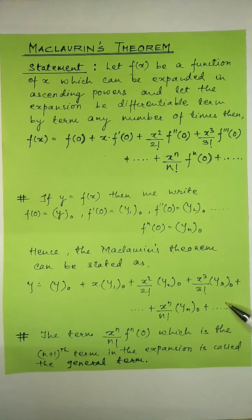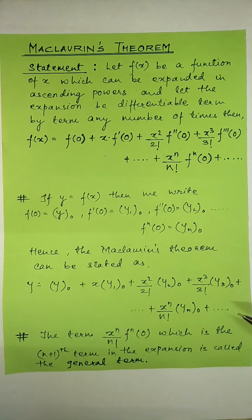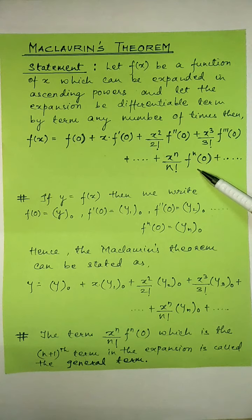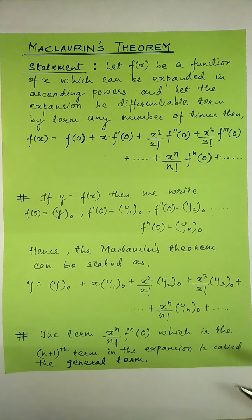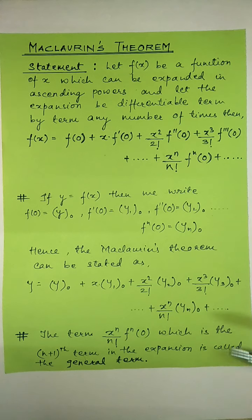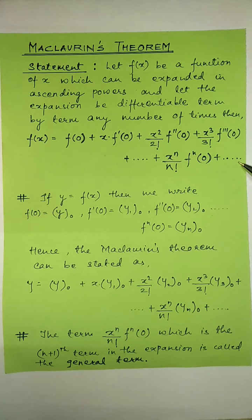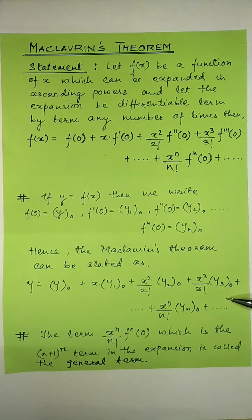So this becomes yet another form of the Maclaurin's theorem. We can use either this form or this form depending upon the numericals and what has been asked. The term x raise to n upon n factorial into the nth order derivative of the given function f of x when x is 0 is the n plus 1th term in the expansion, and it is known as the general term. So we have seen the Maclaurin's theorem, its statement, how it can be expressed — this is also known as the Maclaurin's series, and this is one form and yet another form of expressing the Maclaurin's series.